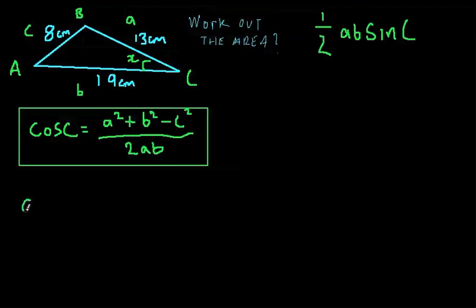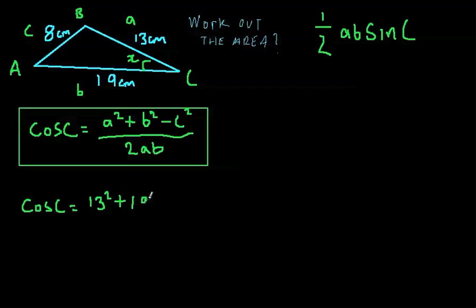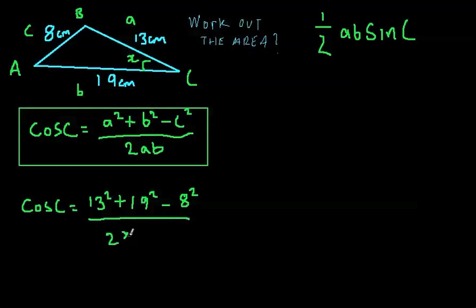So let's do this. This is going to equal to, so cos of C is going to equal to A squared, which is 13 squared, plus B squared, which is 19 squared, minus C squared, which is 8 squared, all over 2 times by A, 13, times by B, which is 19.